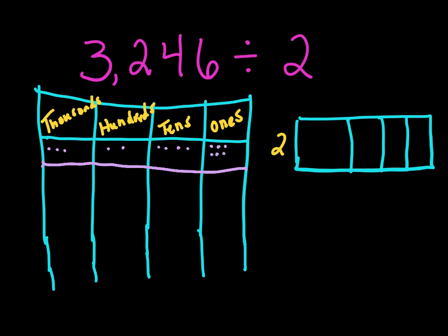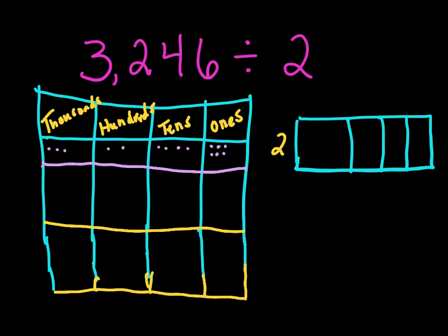Now we're going to break them up into two equal groups. We separate those thousands into two equal groups — we know that there's going to be one left over. We use up 2 of the thousands, and we need to give the remaining 1,000 to the hundreds. That gives us 12 hundreds total.